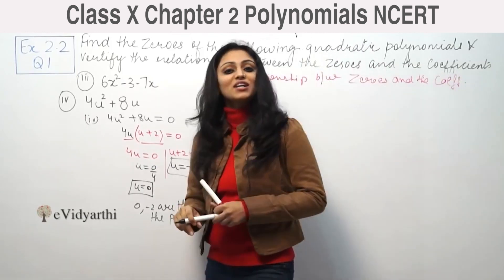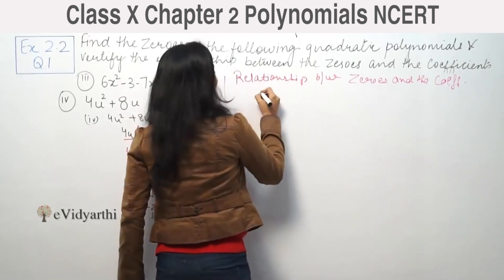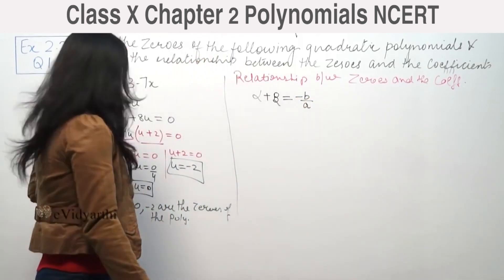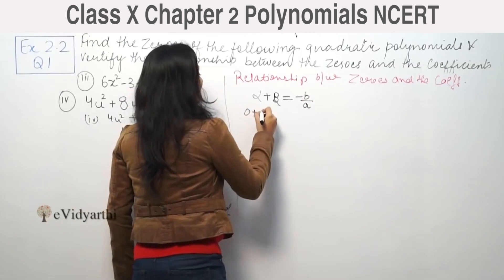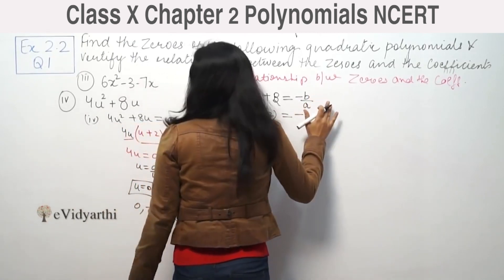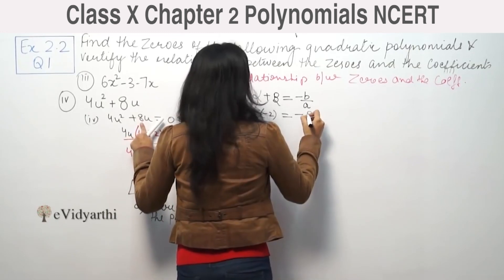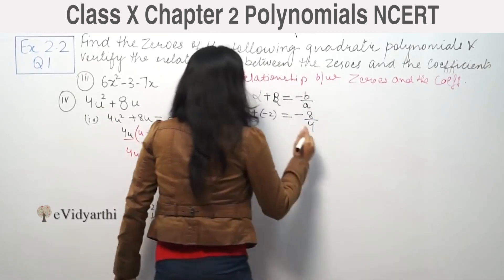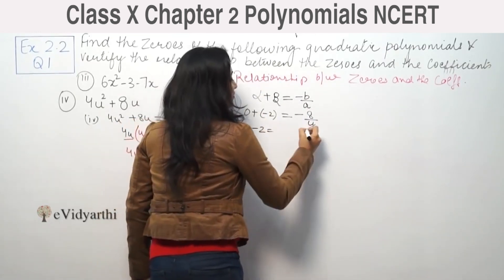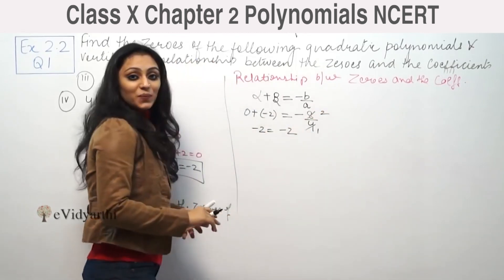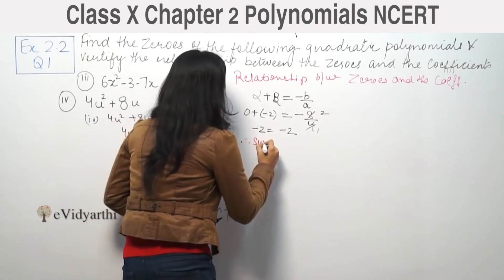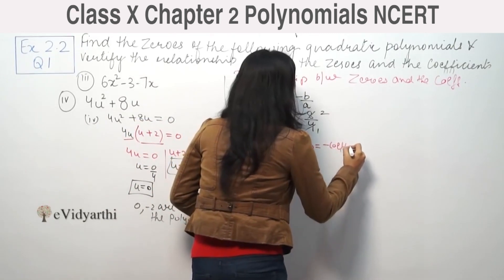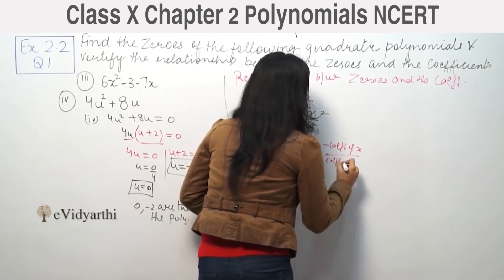Now we verify the relationship between zeros and coefficients. For the sum of zeros, alpha plus beta equals minus b by a. Here alpha plus beta is 0 plus minus 2, which equals minus 2. And minus b by a is minus 8 by 4, which equals minus 2. Both are equal, so sum of zeros equals minus coefficient of x upon coefficient of x squared.